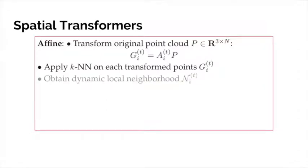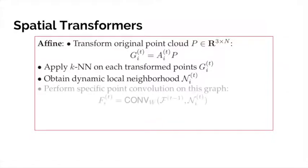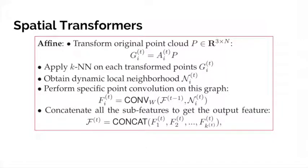For each subgraph at layer t, we can perform a point convolution to get the subfeatures of this graph. We finally concatenate all subfeatures to form the final output feature.